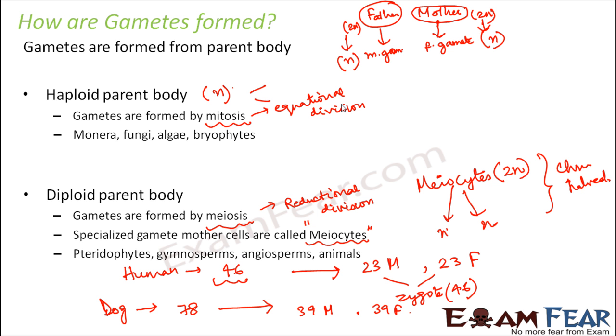Examples of organisms with a diploid parent body include pteridophytes, gymnosperms, angiosperms, and all animals.